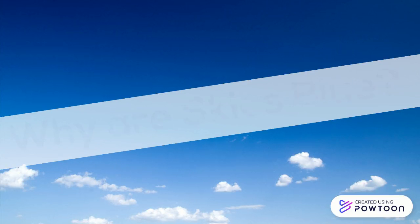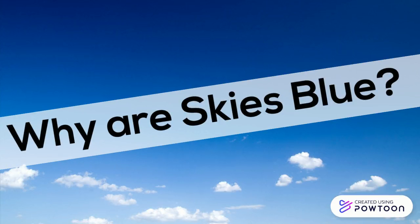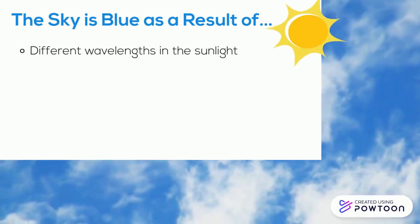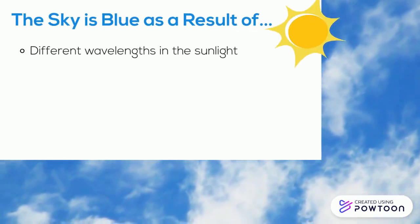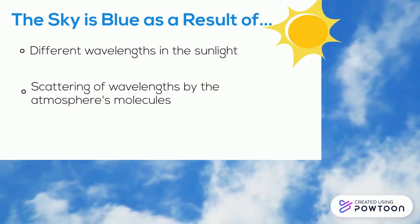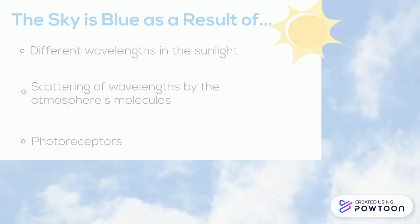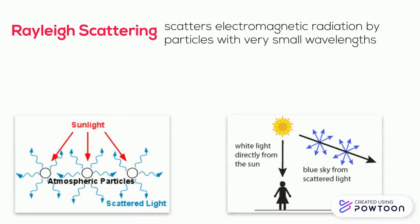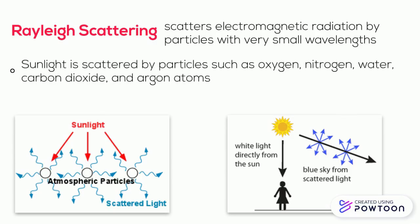Now we can begin answering why skies are blue. The sky is blue as a result of the different wavelengths in sunlight, the scattering of wavelengths by the atmosphere's molecules, and photoreceptors. Rayleigh scattering is the scattering of electromagnetic radiation such as light with very small wavelengths. Sunlight is scattered by particles in the atmosphere such as oxygen, nitrogen, and so on.